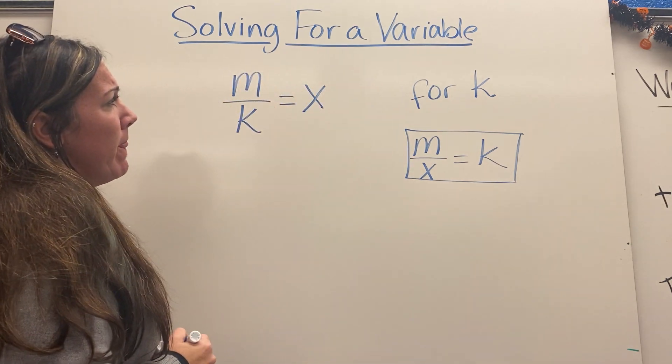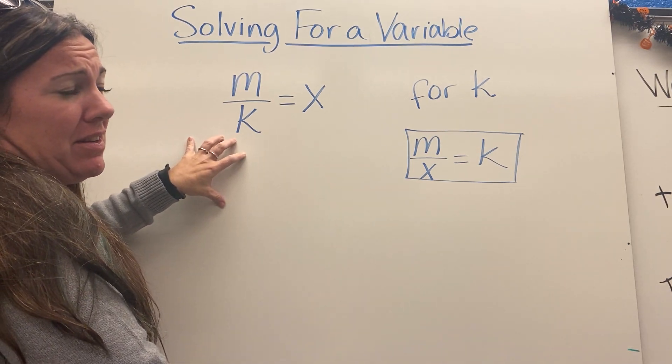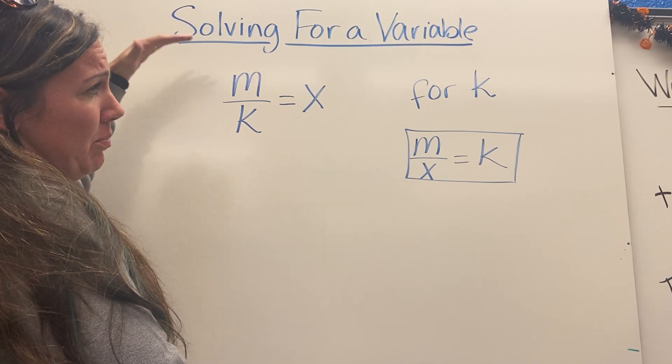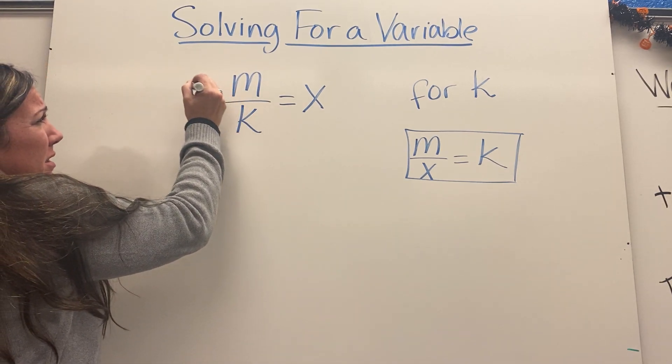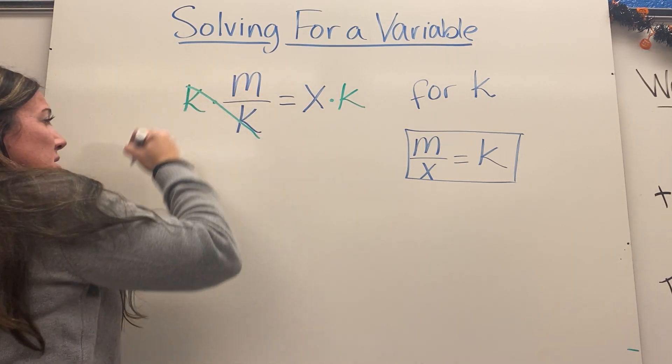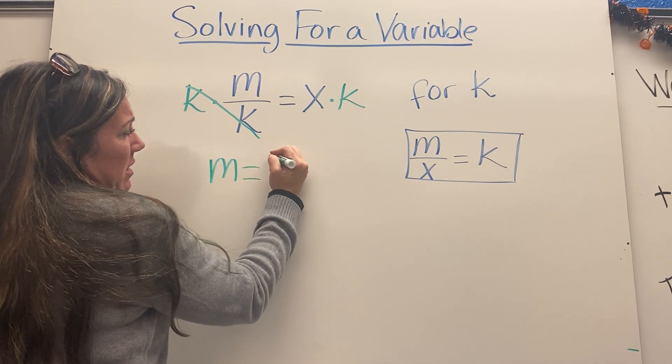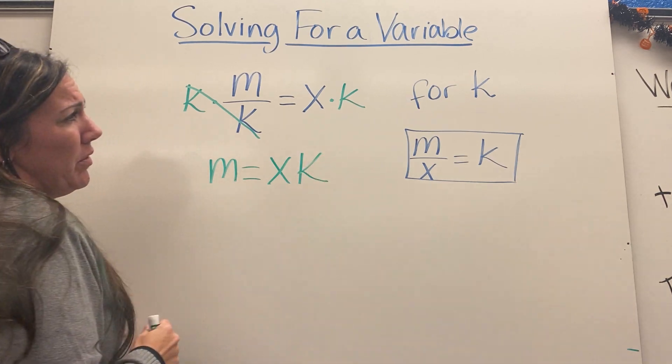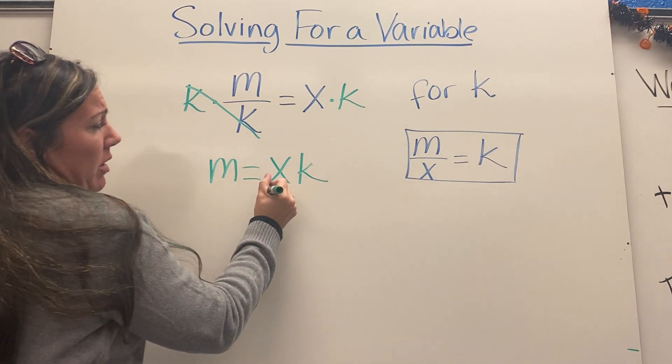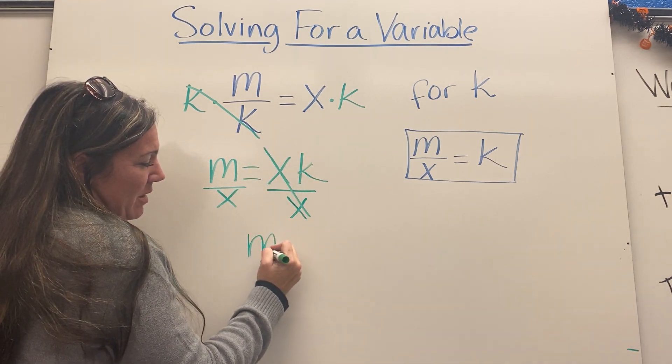If you want to do it the long way, what you have to do is get k out of the denominator. To move k up, you're going to multiply both sides by it. This would cancel out. So what I have is m equals x times k. To get k by itself here, I would divide by x on both sides. These cancel out, and I end up at the same spot.